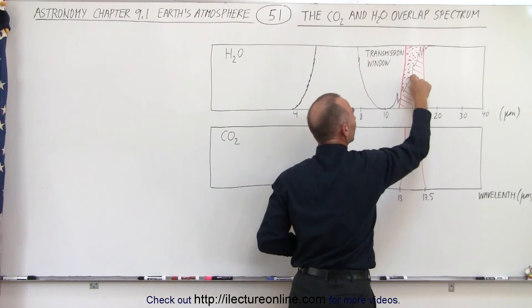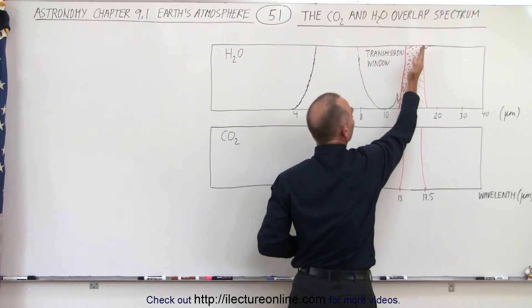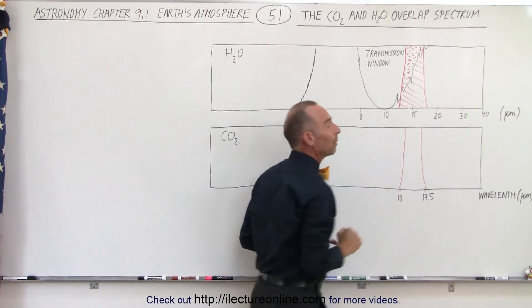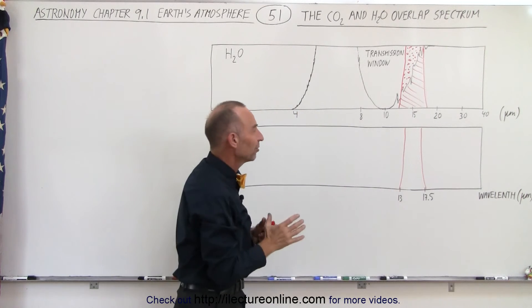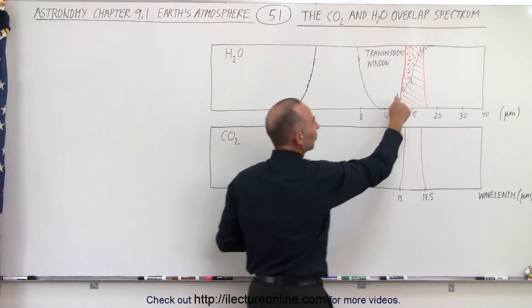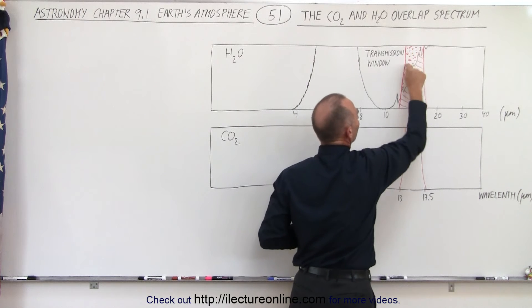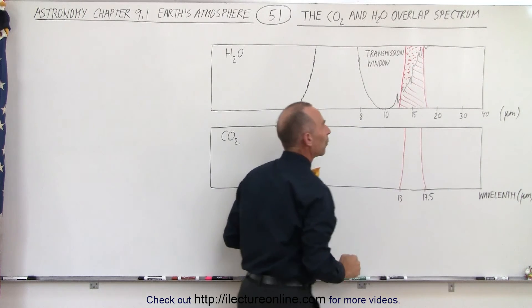So carbon dioxide will aid in the greenhouse effect by absorbing this additional radiation that otherwise would freely go into space. And that's what the significance is of carbon dioxide. It is able to absorb this portion of the spectrum that cannot be absorbed by water vapor.